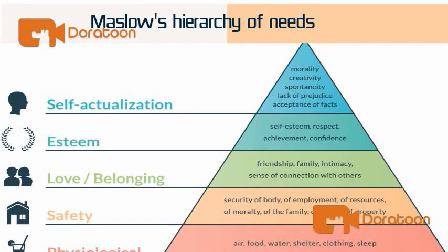Maslow's hierarchy of needs is a motivational theory in psychology comprising a five-tier model of human needs.